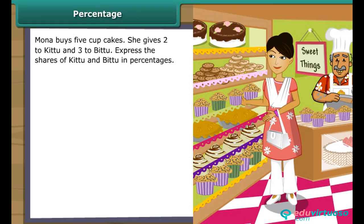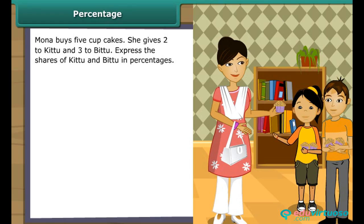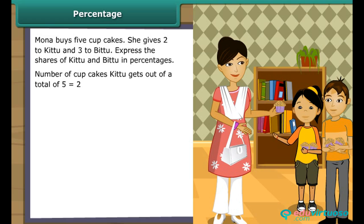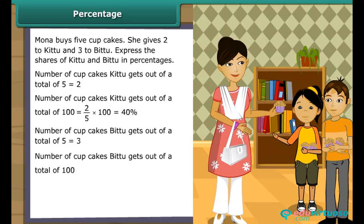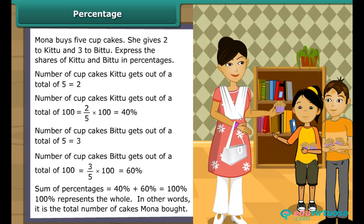Mona buys 5 cupcakes — she gives 2 to Kittu and 3 to Bittu. Kittu gets 2 out of 5, which is 2/5 × 100 = 40%. Bittu gets 3 out of 5, which is 3/5 × 100 = 60%. The sum of percentages equals 100%, representing the whole.